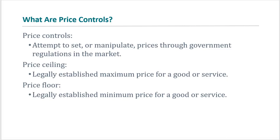Hello everyone, today we will talk about price controls. In some markets, government intervenes and sets prices for goods and services. Price controls are attempts to set or manipulate prices through government regulations in the market. There are two types of price controls: price ceiling and price floor. A price ceiling is a legally established maximum price for a good or service.